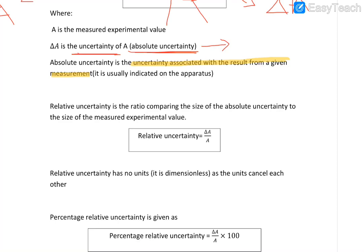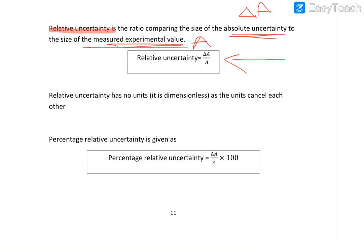From this arises the term relative uncertainty. Relative uncertainty is the ratio comparing the absolute uncertainty—which is delta A—to the size of the experimental value, which is the value of A. So delta A over A—that's the relative uncertainty. And then we have percentage relative uncertainty.